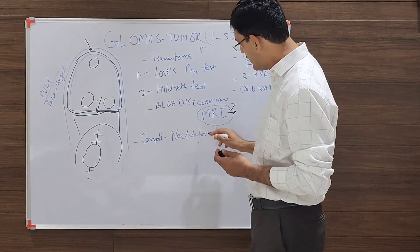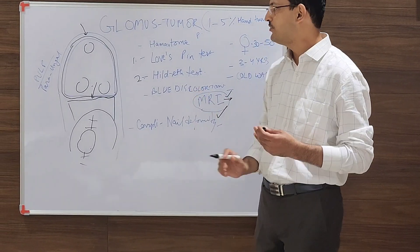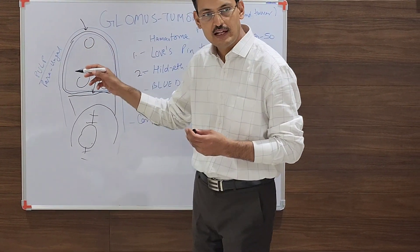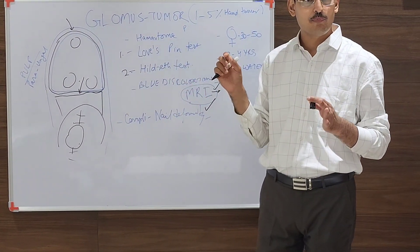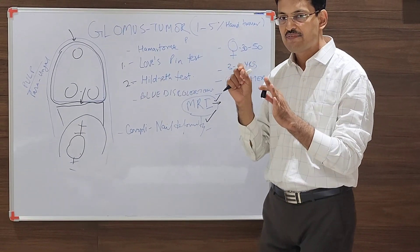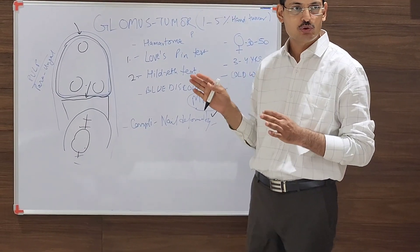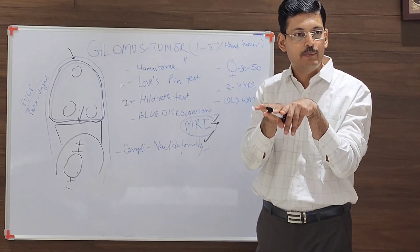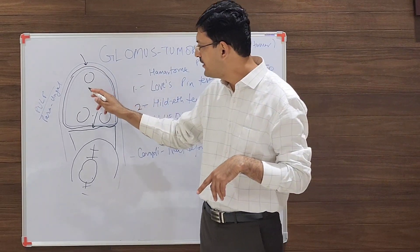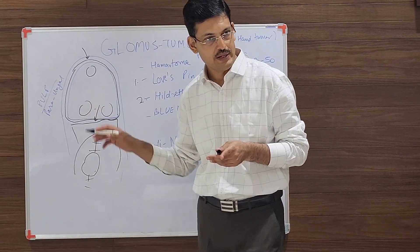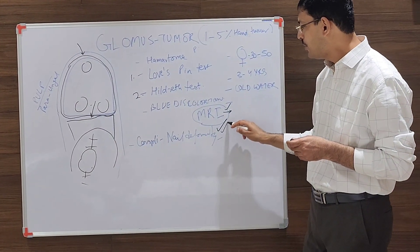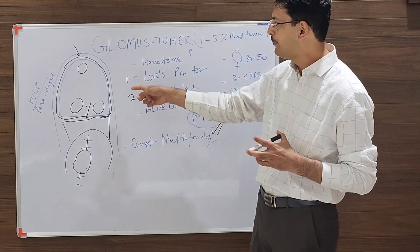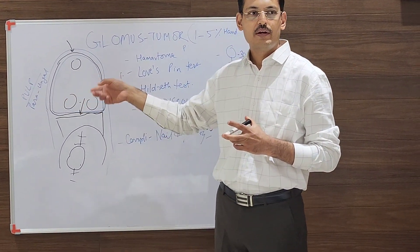There is a complication described called nail deformity, because we are operating on the nail bed and excising it. It has to be done with a lot of precision — preferably under a microscope — excising only the fragment while keeping the nail bed intact. If the nail bed is not sutured properly, you can develop nail deformities. The other complication is recurrence: if you are not able to remove the tumor completely, it may recur.